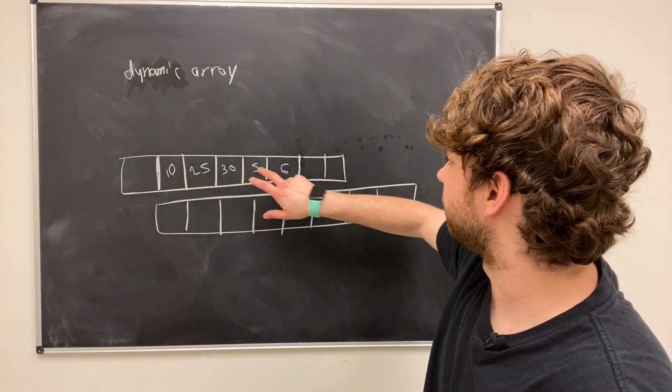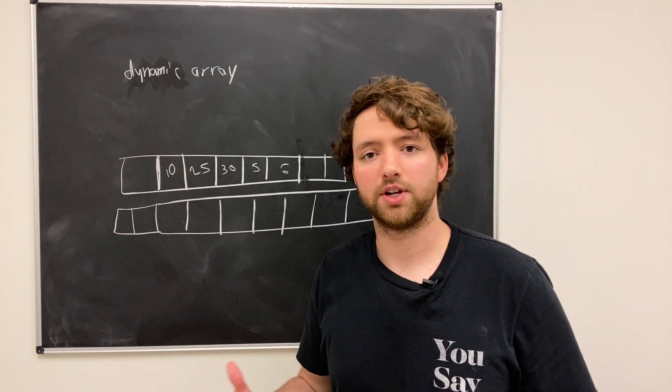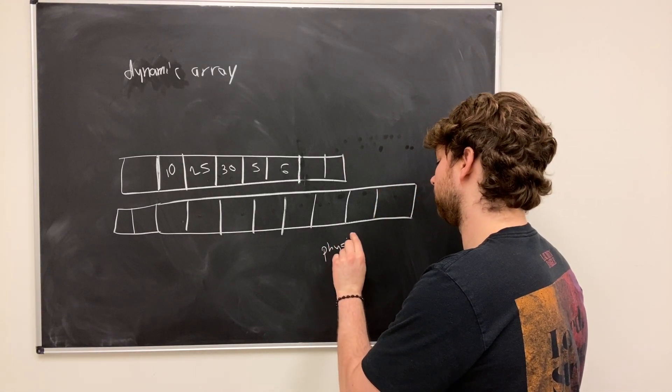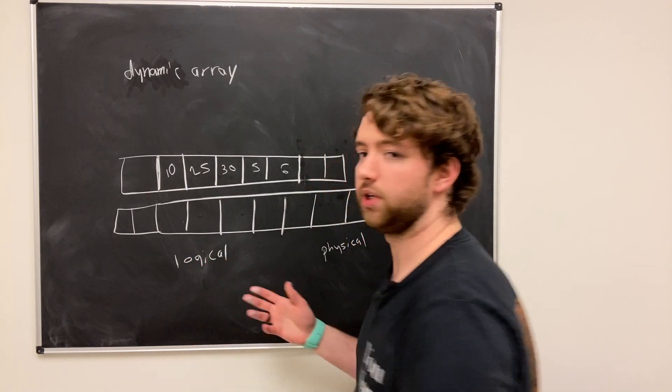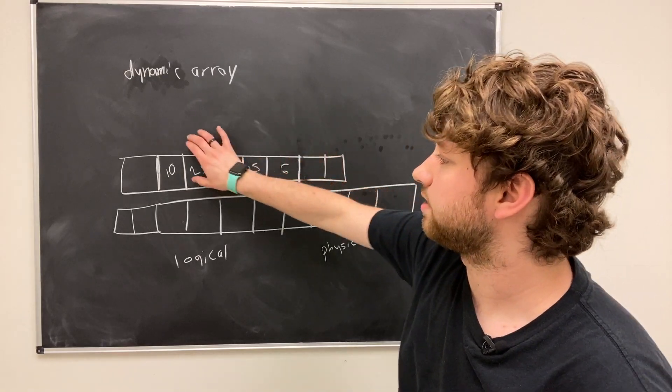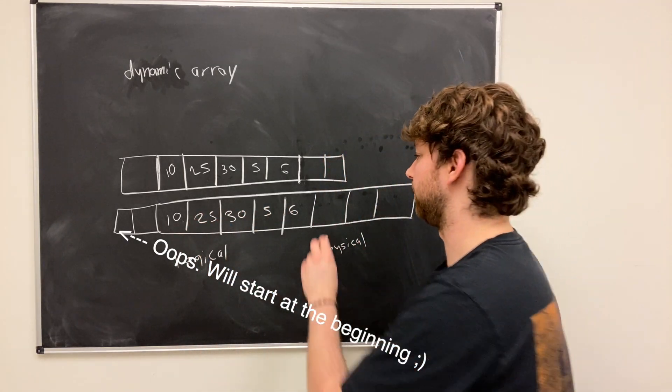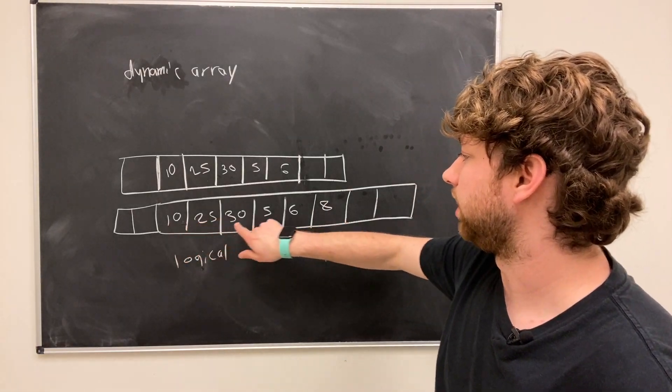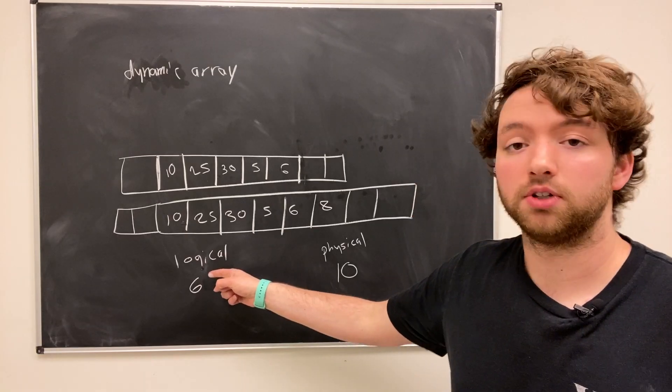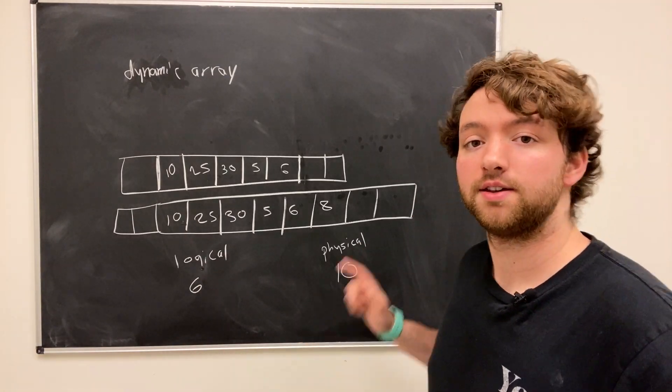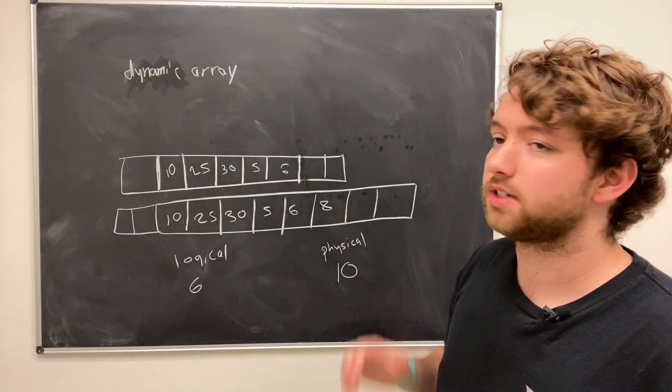And it'll probably like double the size. So we have one, two, three, four, five, six, seven, eight, you probably end up having 10 spots. So in this situation, you have pretty much a physical length, how much room it takes up in memory. And then you also have a logical length, which is how many elements you have in it. So behind the scenes, this will actually be copied over to this larger array. So you'll have 10, 25, 30, five, six, and let's say you added the element eight. So the logical length here is going to be six, there's six elements. The physical length here is going to be 10. Whenever this logical length is increased beyond the physical length, the physical length will increase, likely doubling. So if you go above 10, it'll likely double to 20. So that is how a dynamic array works.